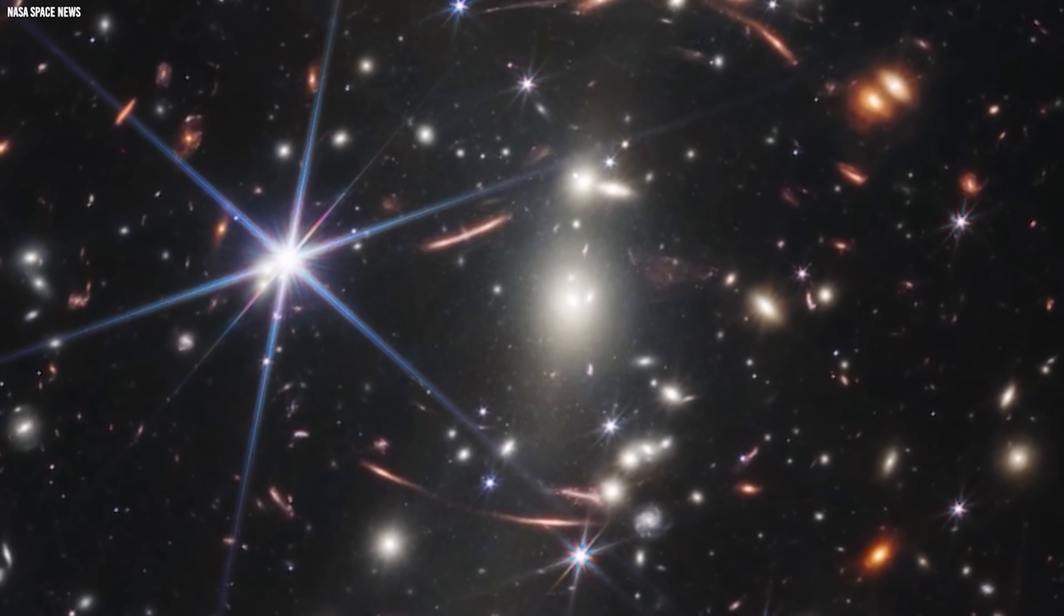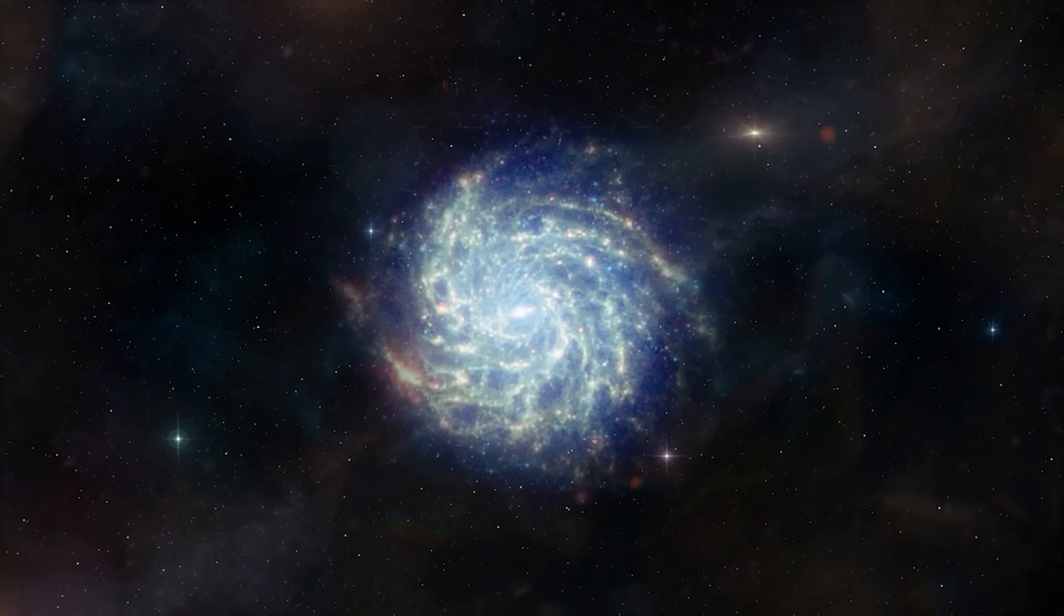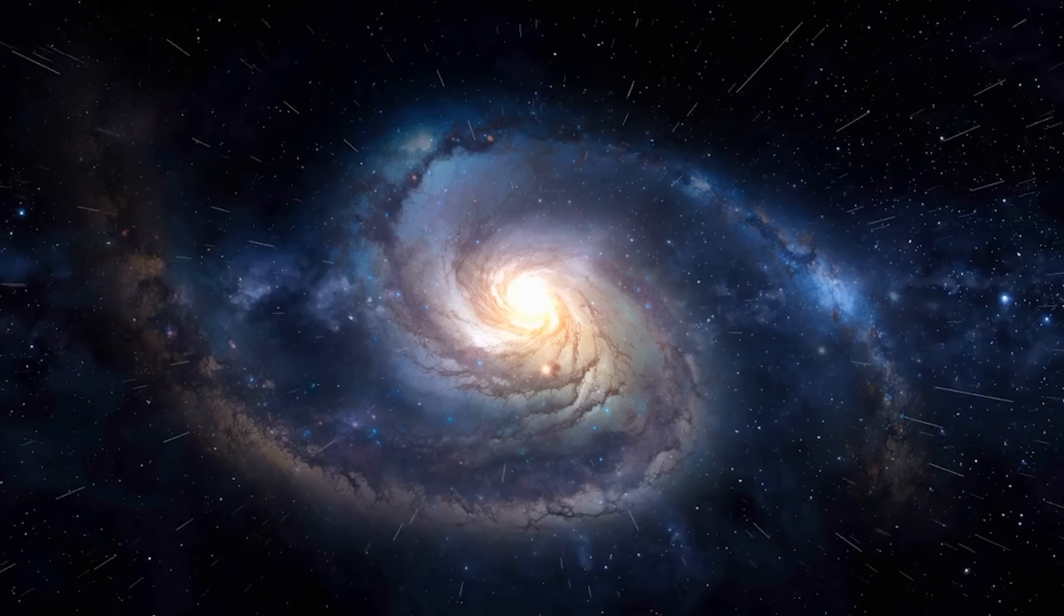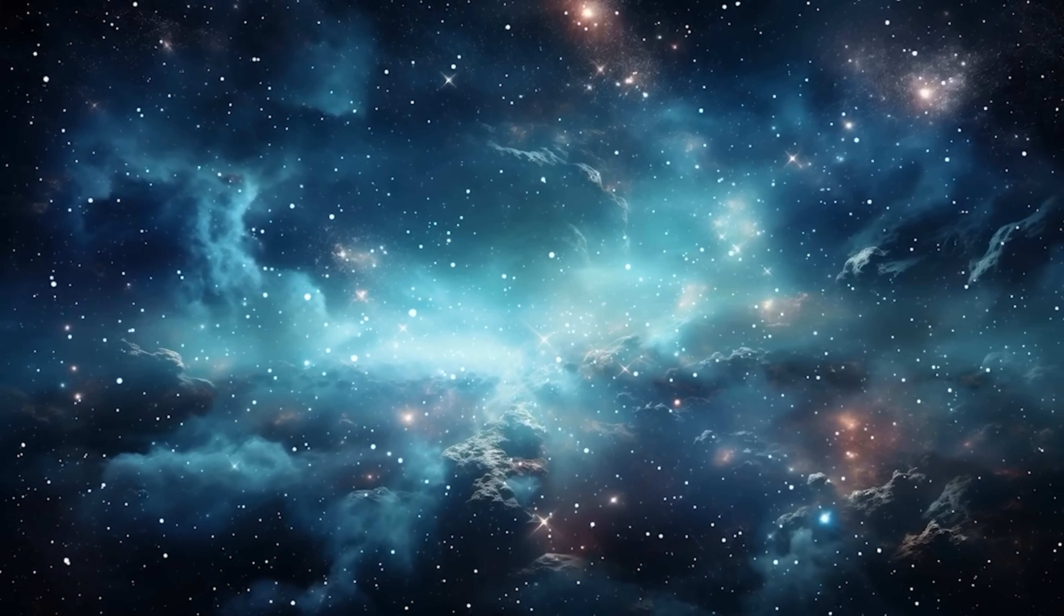The early universe was supposed to be chaotic, irregular, and slow-moving. Small proto-galaxies forming, early stars burning out, matter collapsing in clumps.